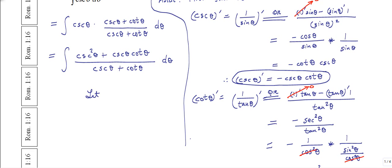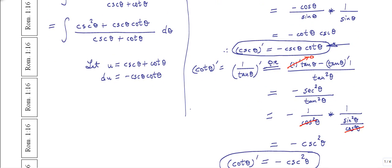We do a u-substitution on the denominator, letting u equal cosecant theta plus cotangent theta. Taking the derivative of this, the derivative of cosecant is minus cosecant theta cotangent theta, and the derivative of cotangent is minus cosecant squared theta, so du equals minus cosecant theta cotangent theta minus cosecant squared theta, times d theta. Multiplying both sides by minus one, we get minus du equals cosecant theta cotangent theta plus cosecant squared theta, times d theta — which is exactly the numerator.